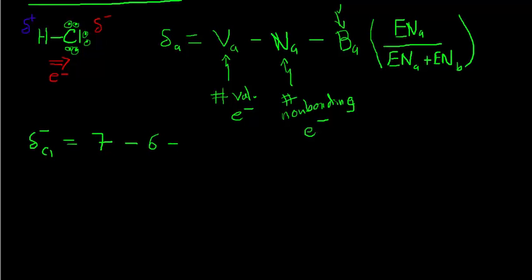Then we're going to subtract off the number of shared electrons. Right here in this bond, a straight line means a pair of electrons, so we've got two shared electrons.